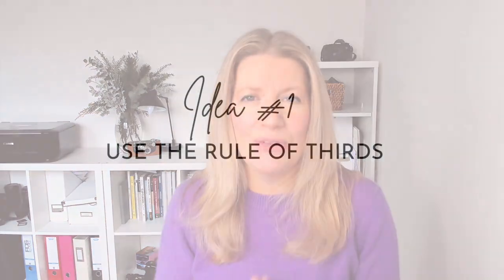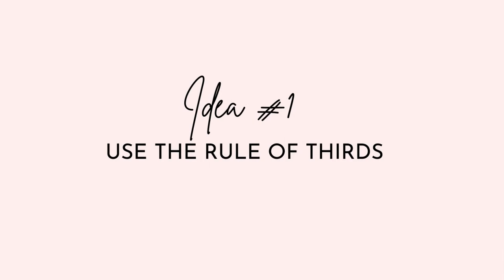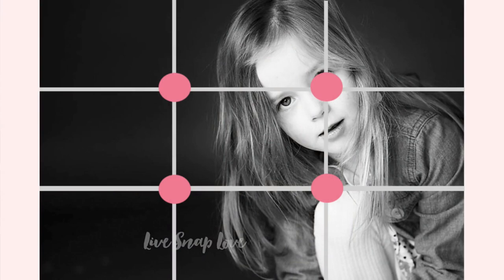Let's start with one that is easy for you to do as a beginner because it doesn't require you changing any settings on your camera, and that is to use the rule of thirds. The rule of thirds is a photography composition tool or guide that will help you get more interesting and dynamic images. Rather than having your subject bang smack in the center of the frame all the time, you want to try and move them to the side. We do this by mentally dividing up the frame into nine equal sections — two horizontal lines and two vertical lines, just as you can see on this image on the screen now.